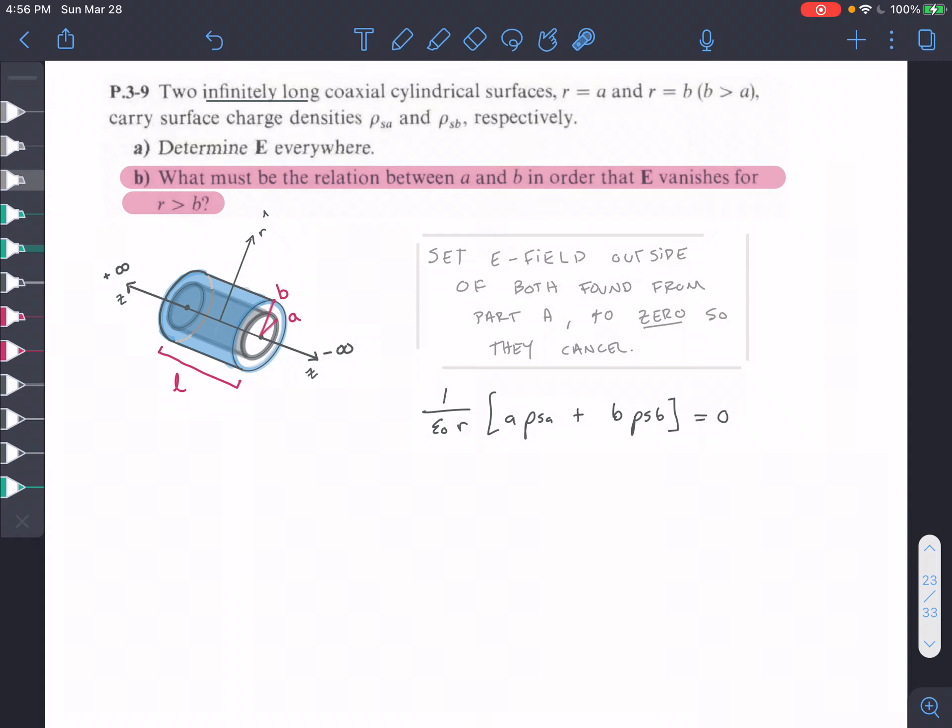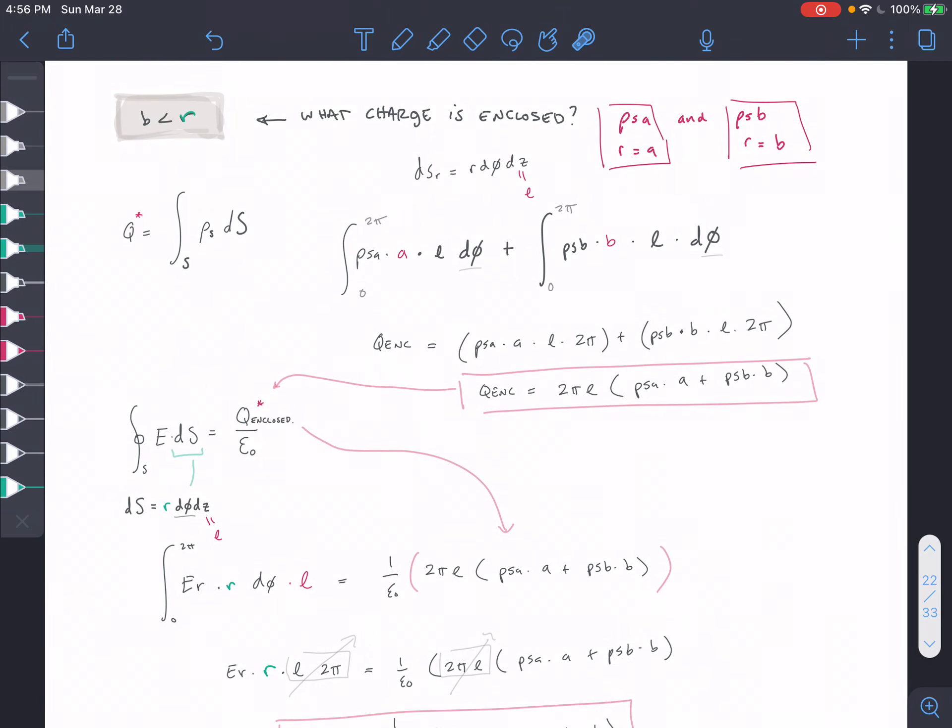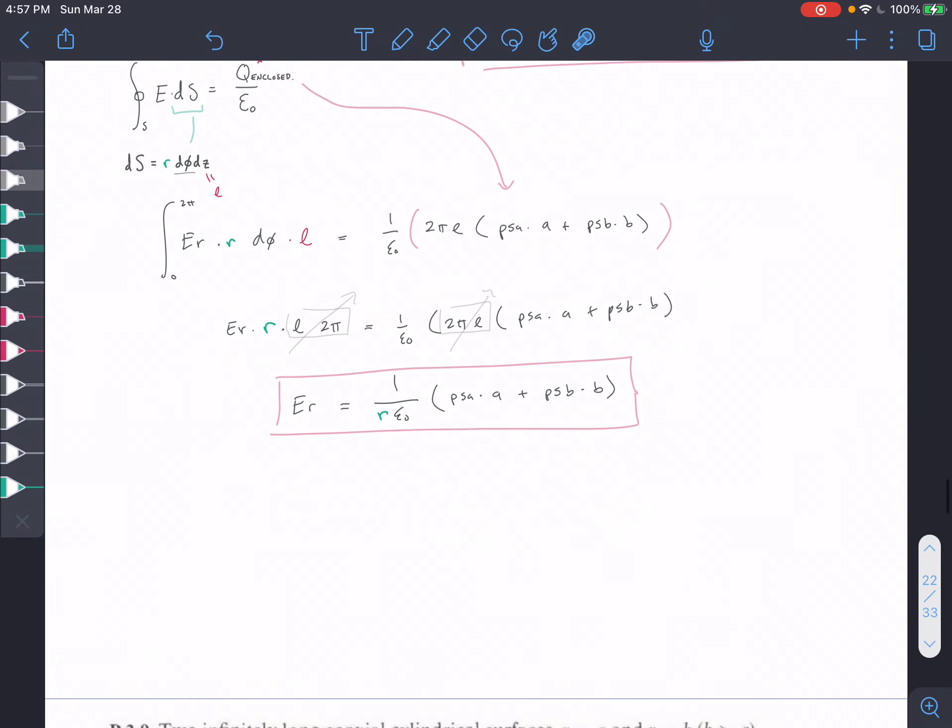It's basically going to be a ratio to have the E field vanish for R greater than B. So in part A, we had to find this E field for R greater than B, and this is what we got.